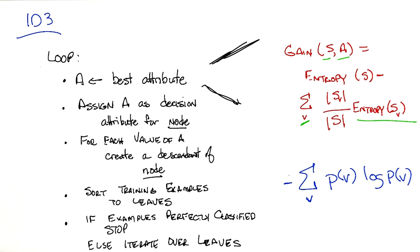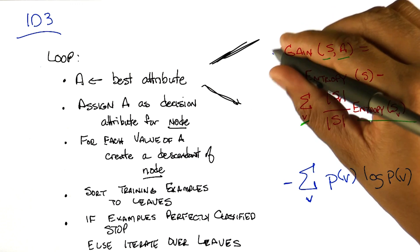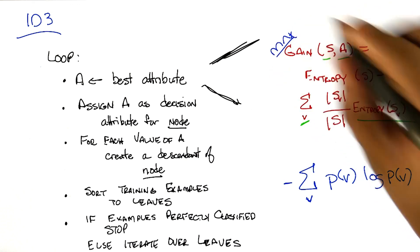So is that how we're choosing the best attribute, the one with the maximum gain? Exactly. So the goal is to maximize over the entropy gain. And that's the best attribute.